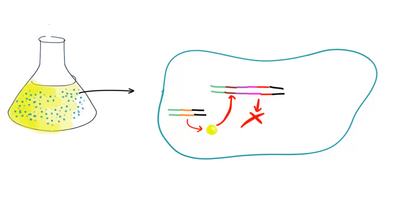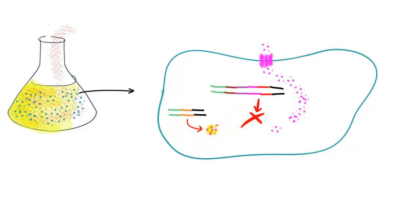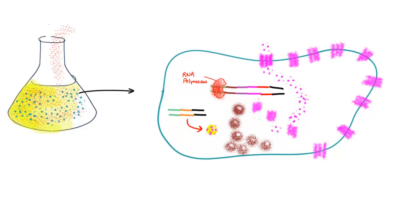But what if you add lactose into the medium? Lactose can take entry inside the cell and it can bind to the repressor. Now repressor cannot bind to the operator so the transcription can happen by the RNA polymerase. And it can make different enzymes such as beta-galactosidase, permease. Permease can incorporate itself into the plasma membrane so that more amount of lactose can take entry into the cell.